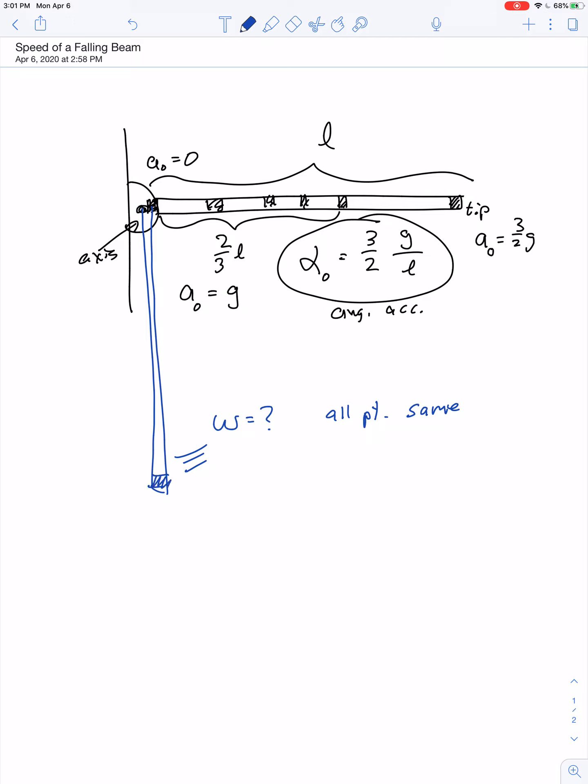However, the tip is going to have a much greater tangential velocity than a point halfway to the bottom. And of course, the point here adjacent to the axis has a tangential velocity of 0 by the time the beam has gone vertical.